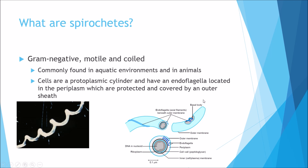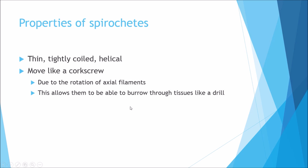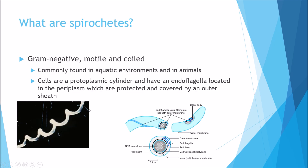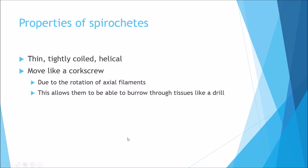In terms of morphology, they are a protoplasmic cylinder, and deep inside they have endoflagella which are located between the outer sheath and the cell wall. A few properties of spirochetes are that they are thin, tightly coiled and helical, and they move like a coarse screw — literally like a champagne corkscrew. Deep inside you have something called an axial filament, and the rotation of the axial filaments allows it to propel itself forwards and burrow through tissues like a drill.